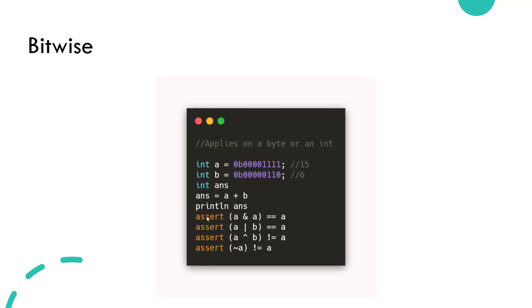Next, we will see the bitwise operators, where you will be able to perform operations on bytes. Here we are doing addition on the byte — 15 plus 6 — which will yield the value 21. We are also asserting the variables using the AND, OR, and NOT operators.